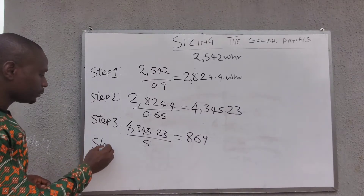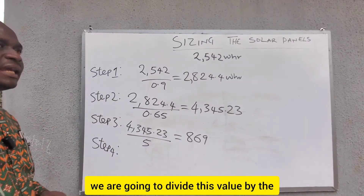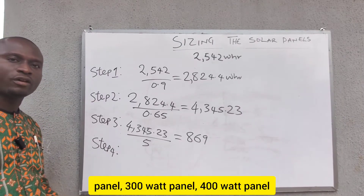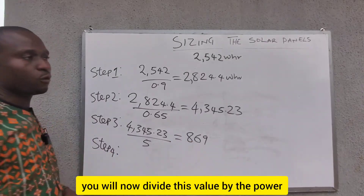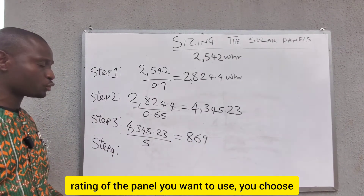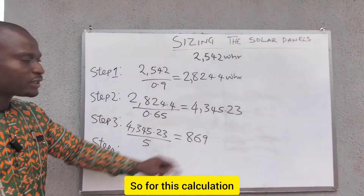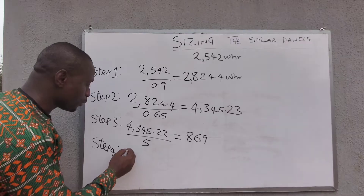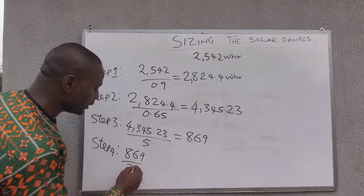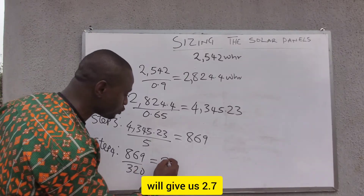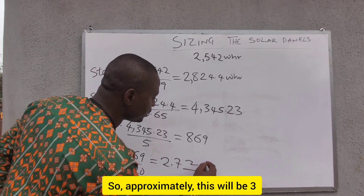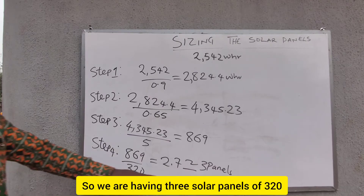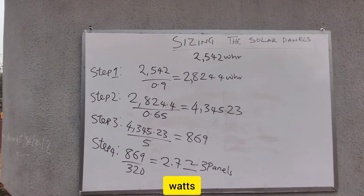Step 4: divide this value by the power rating of the panel you want to use — whether 150W, 200W, 300W, or 400W. This gives you the number of solar panels needed. For this calculation, we are using a 320W panel. So 869 divided by 320 gives us 2.7, which we round up to 3 panels. We need 3 solar panels of 320 watts.